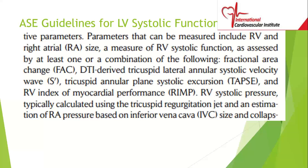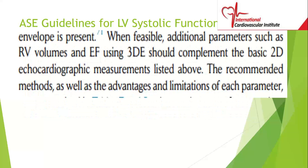We would normally look at the RV systolic pressure, calculated by looking at the TR regurgitant jet. We get the gradient by 4V squared using the velocity, then estimate the right atrial pressure based on the inferior vena cava. These are routine measurements. When feasible, additional parameters such as RV volumes and ejection fraction can also be obtained.